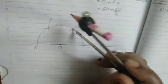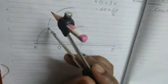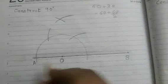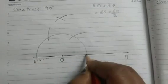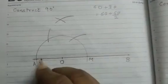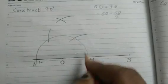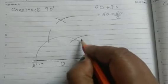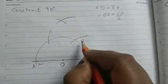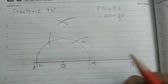I am bisecting this 120. Now let me point it and say this point is L, this point is M. So from L and M I have taken the same radius, cut an arc at N. From N I have cut an arc at some P.